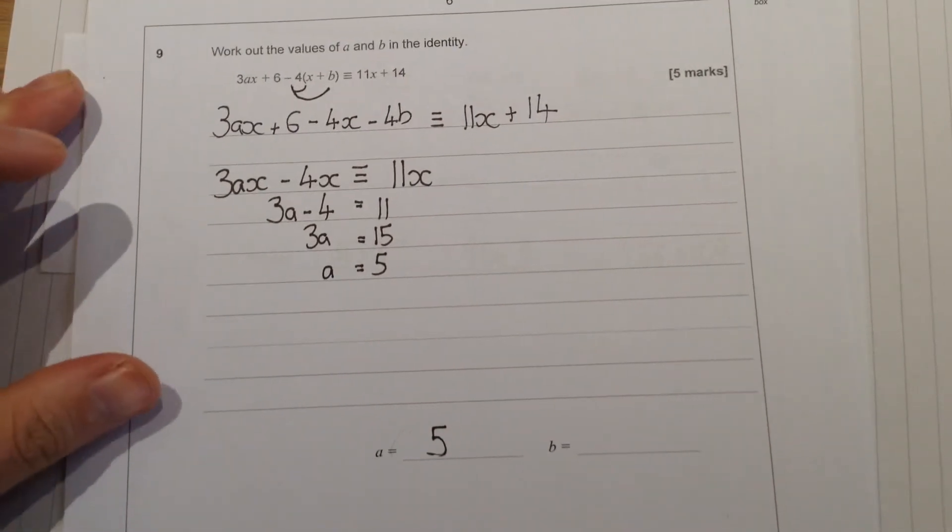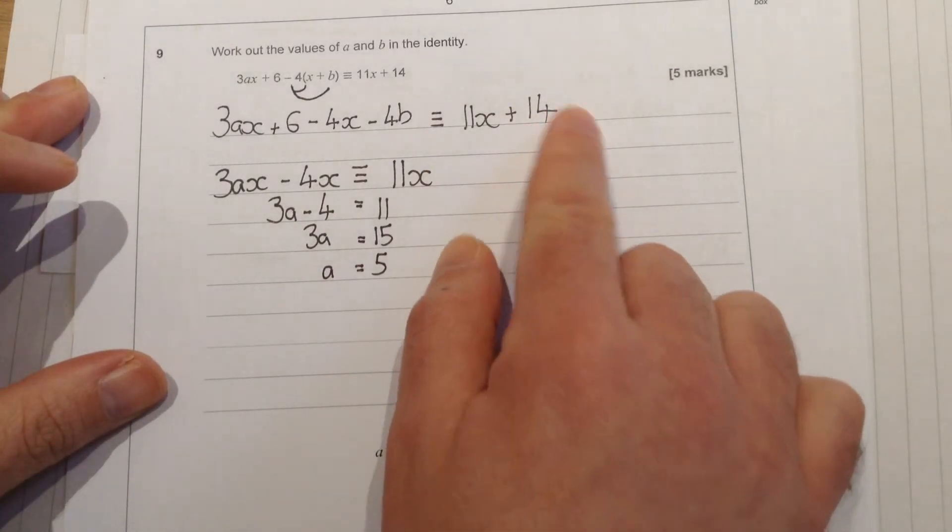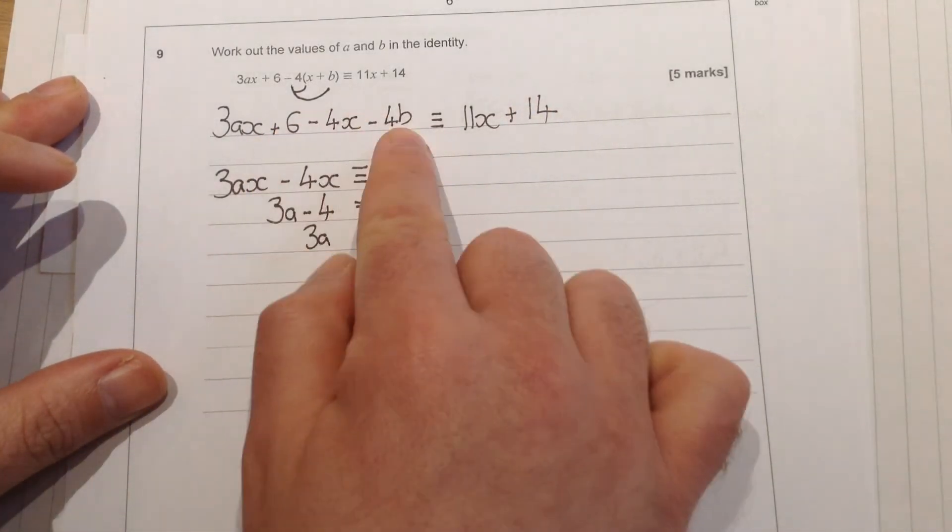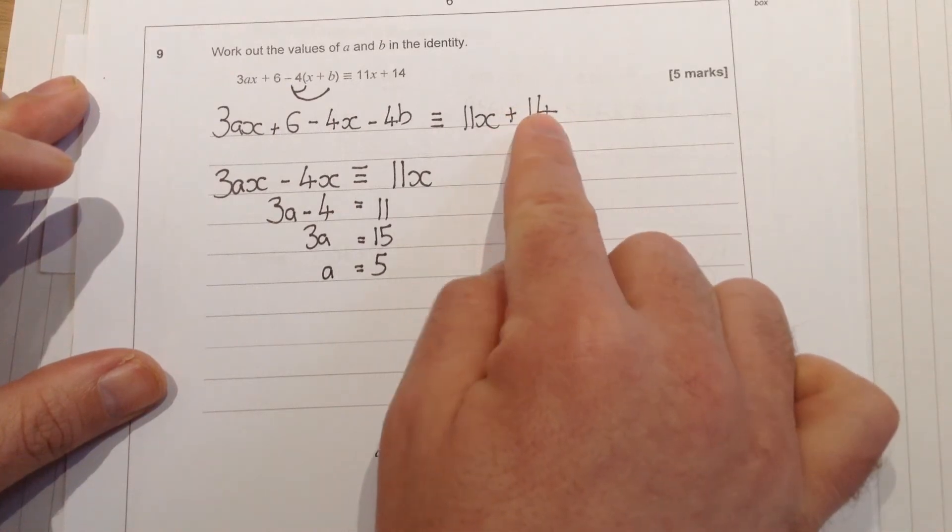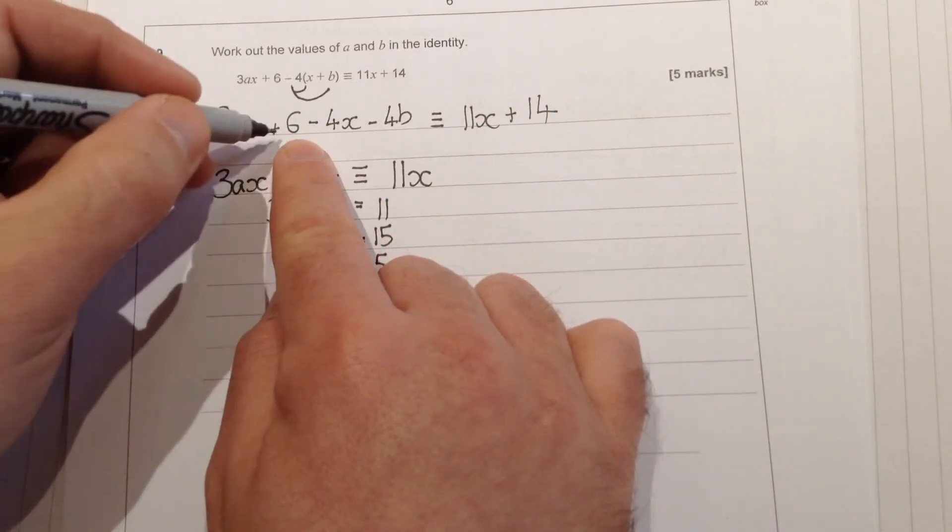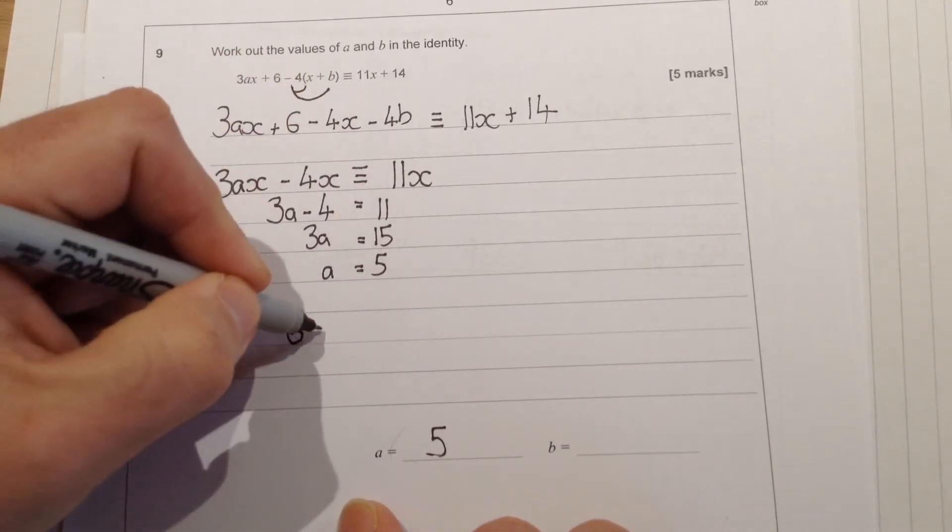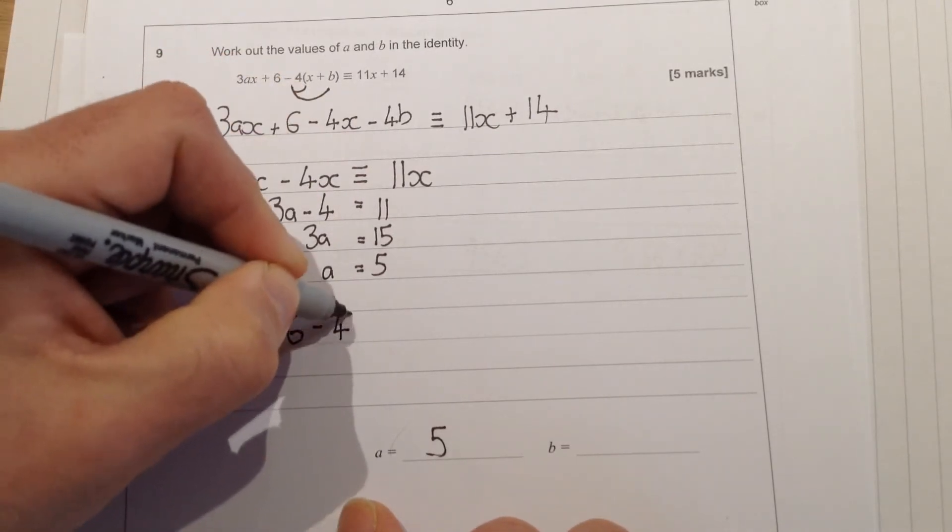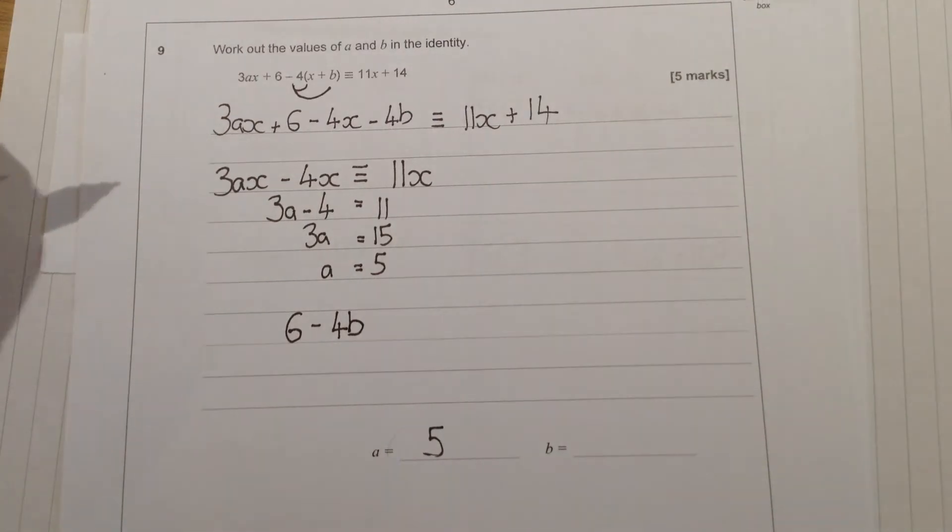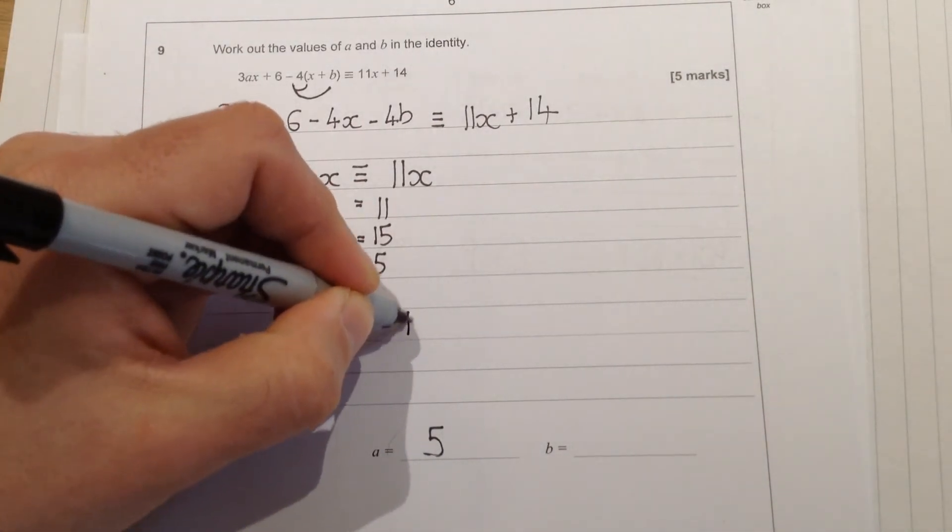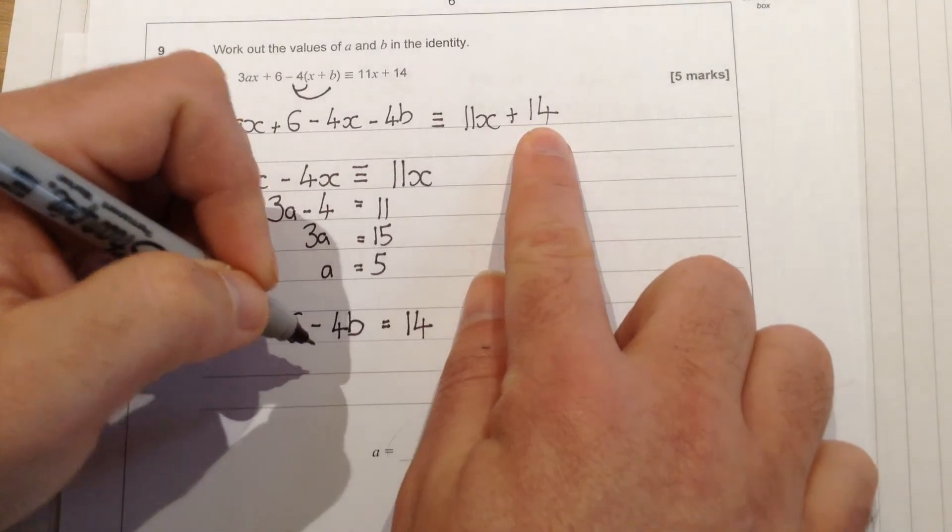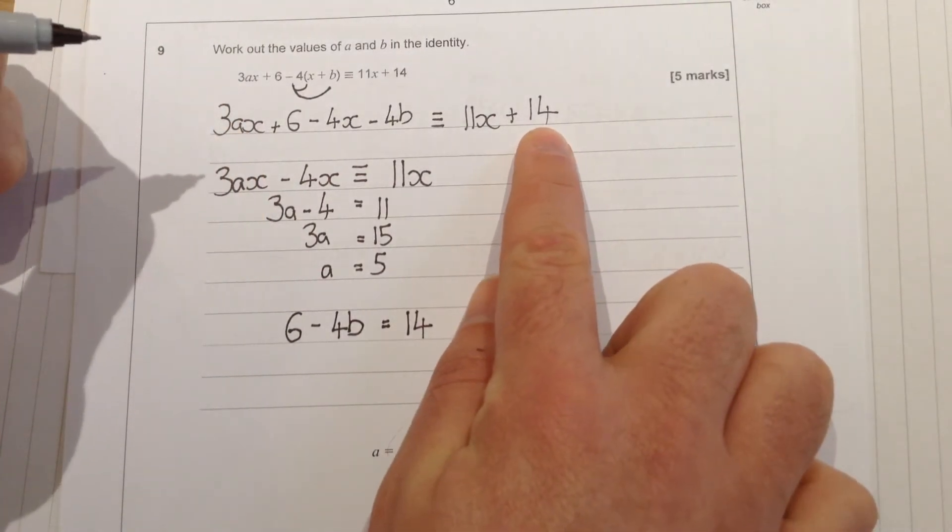I'm going to do the same now with b. Now if you look, b is just a number related to numbers on their own, so the number on its own there is 14. So I want the 6 here and the minus 4b, the bits that have got nothing to do with x, I want that to equal 14, so the bit that has nothing to do with x on that side.